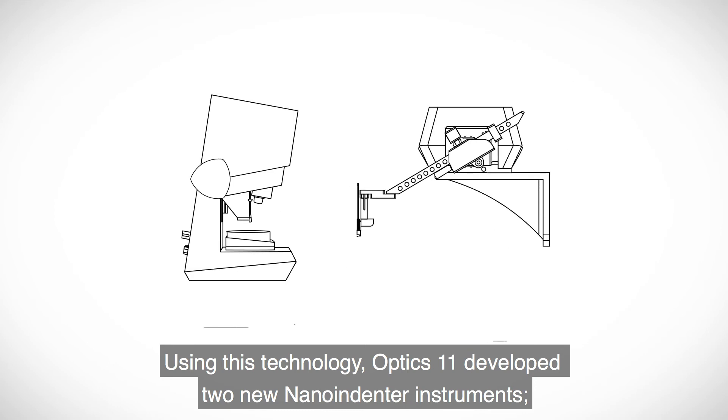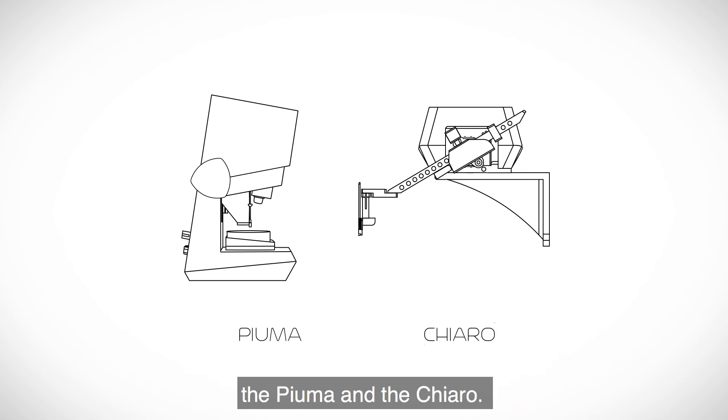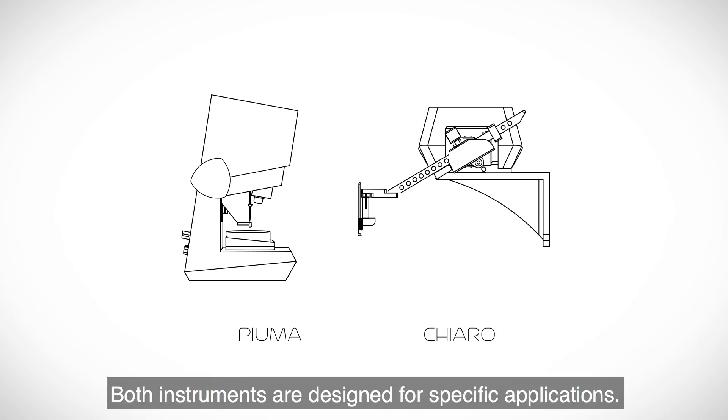Using this technology, Optics 11 developed two new nano-indenter instruments, the Puma and the Chiaro. Both instruments are designed for specific applications.